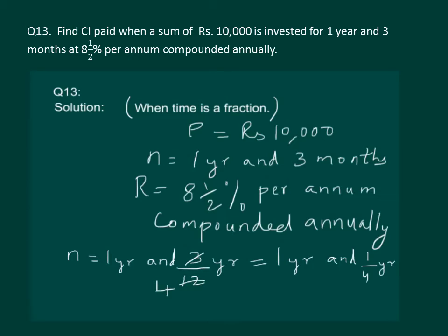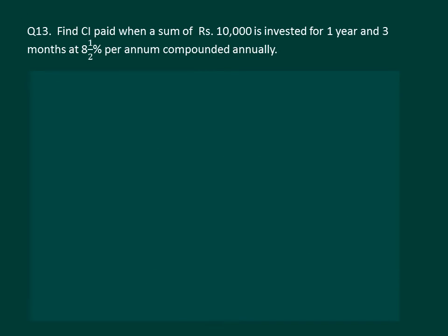Now we will start the calculations of compound interest. What we will do is find the amount for the whole part, that is one year, and then use this amount as the principal to calculate simple interest for the remaining one-fourth year. When we add the two, we will find the total amount to be paid for one year and three months.